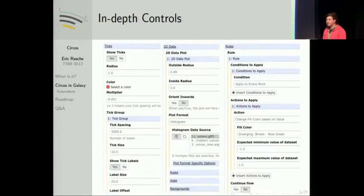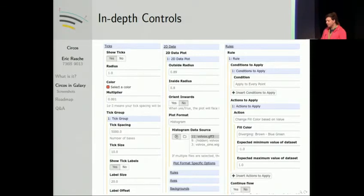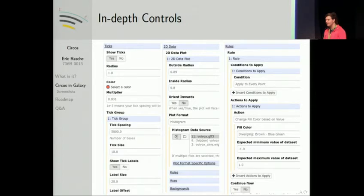We've struggled to provide some really in-depth controls for this. We've made advanced use of repeats, nested conditionals, sections — everything we could possibly get our hands on to give as many controls to the user as possible. Heavy use of color. As you can see, we let you control every facet that you could possibly want, everything from tick groups to the different types of data and sub-options for those, things like rules. Rules are very interesting in CIRCOS — you can control plot color, plot style, and many features about individual plotted points based on your data.